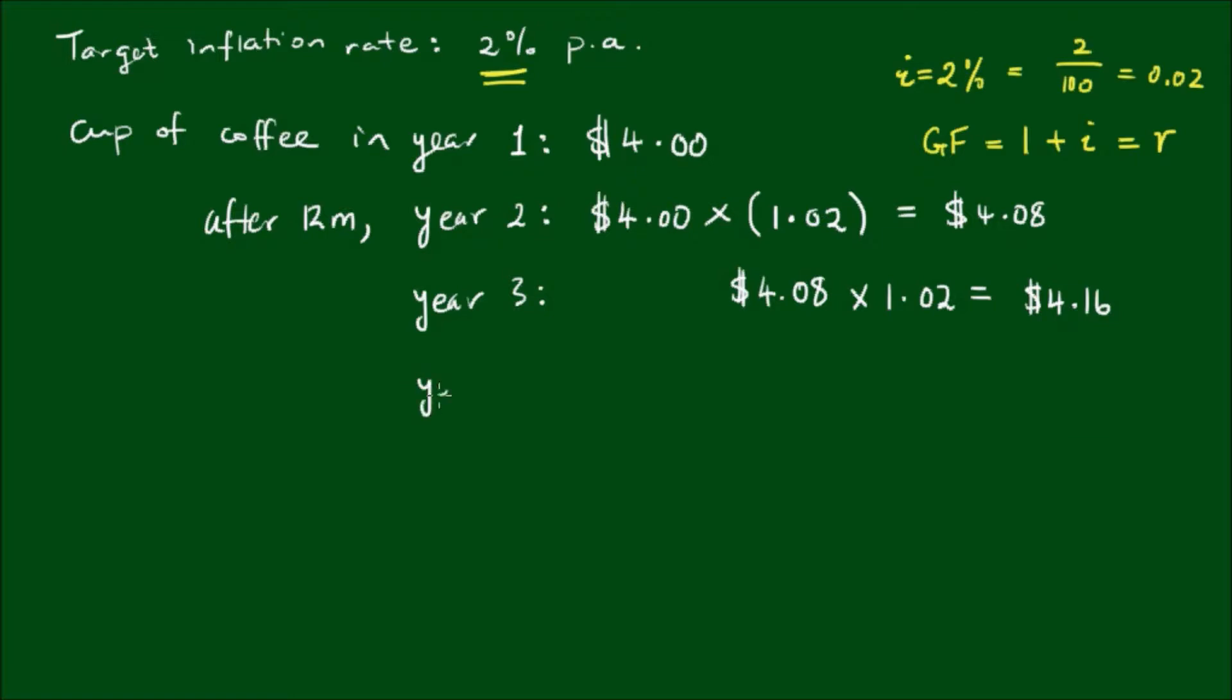After year four, another 12 months, the starting price is $4.16. Multiply that by another 1.02 in year four, and to the nearest cent it is $4.24. Now the reason I've written it like this is because instead of writing the previous year's price, instead of writing $4.16 for the starting price in year four, or the ending price in year three, what I'm going to do is bring down the expression that we had from above.